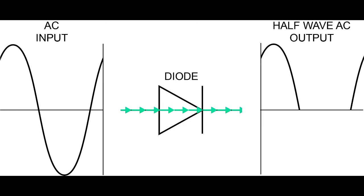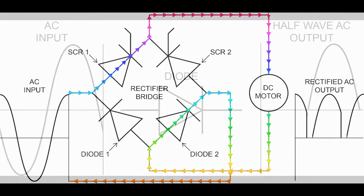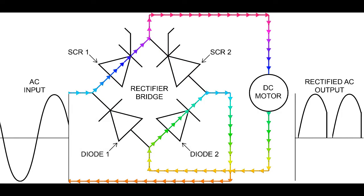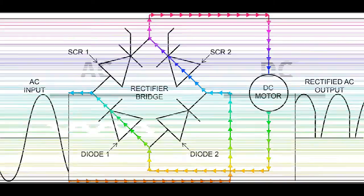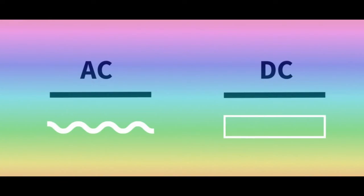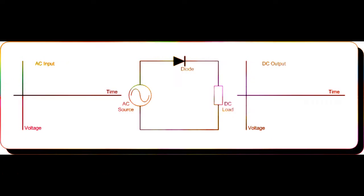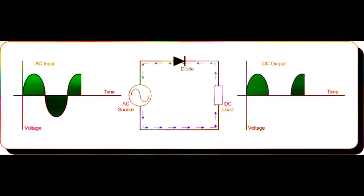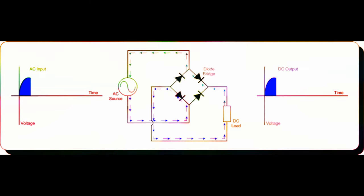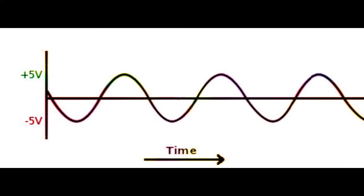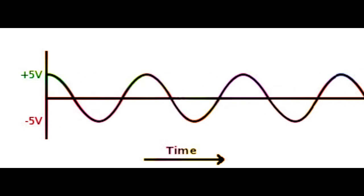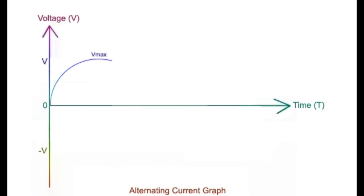Controlled rectifier components such as thyristors are also used. However, direct current rectified by diodes is not as pure as that obtained from a battery source, but has voltage changes in the form of ripples superimposed on it as a result of the alternating supply. For single-phase rectification to take place, we need an AC sinusoidal waveform of a fixed voltage and frequency as shown.